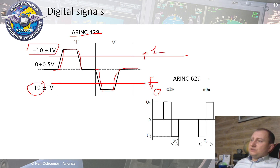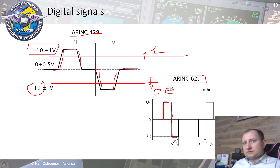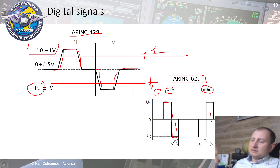However, different signals can be used for data transferring. For example, in ARINC 629 it uses the following signal: a logical one is a sequence of a positive pulse then a negative pulse, and a logical zero is the opposite sequence — a negative pulse then a positive pulse. This approach has a few advantages which we will talk about a little bit later.